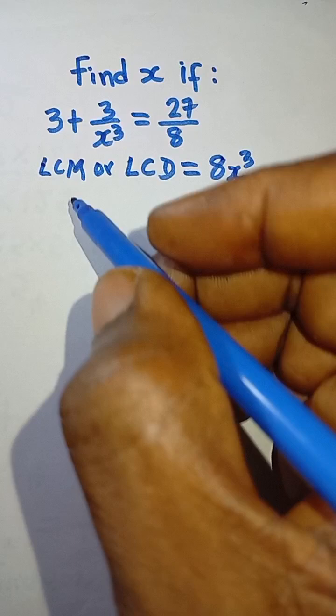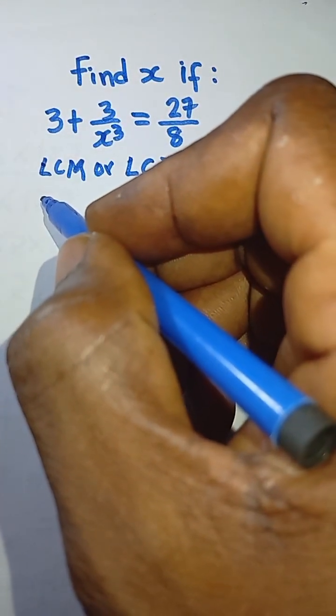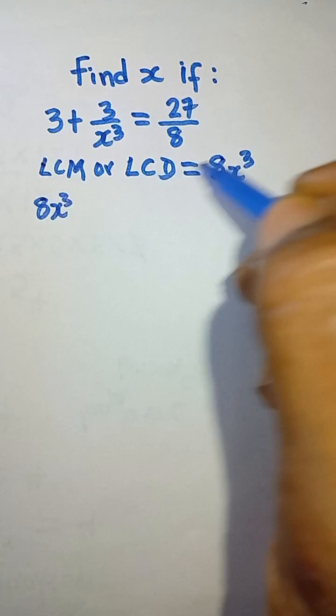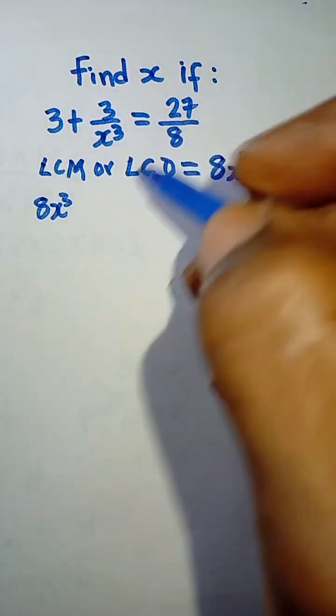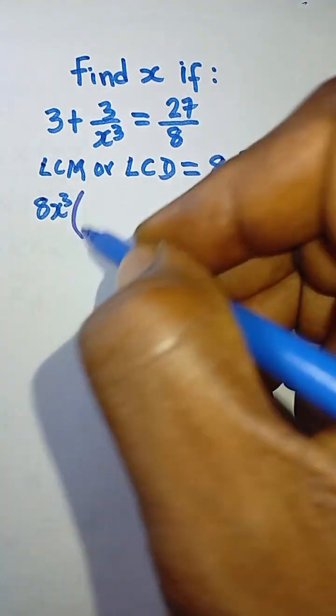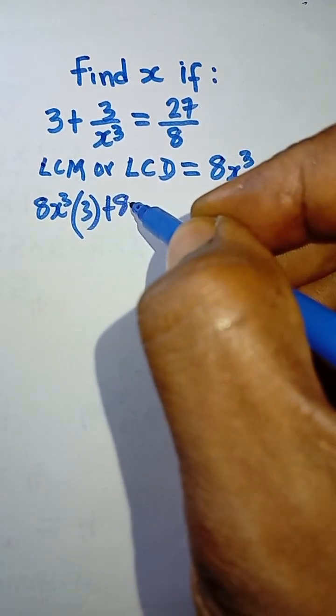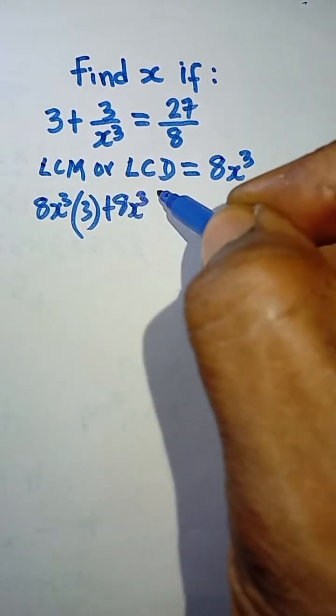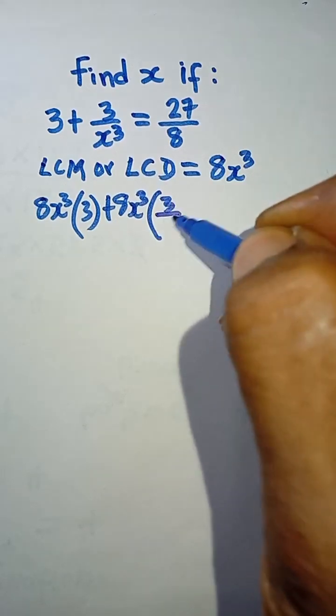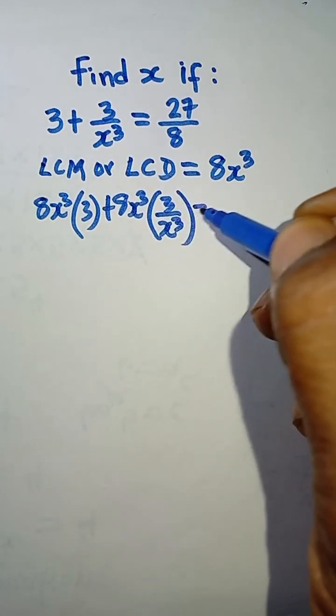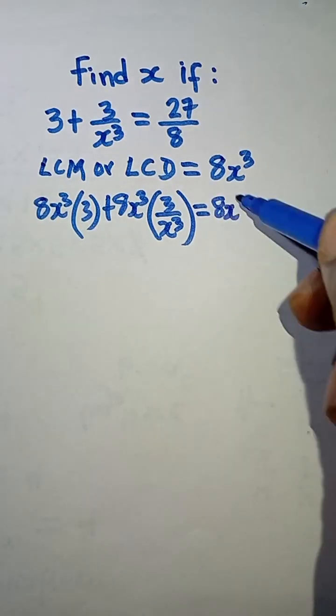So the next thing to do is to multiply each term. You multiply 8x cubed, this LCD, to each of the terms there. So you have 8x cubed multiplied by 3, plus 8x cubed multiplied by 3 over x cubed, and is equal to 8x cubed multiplied by 27 over 8.